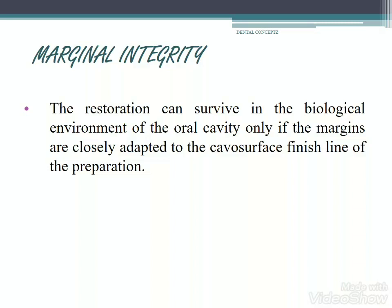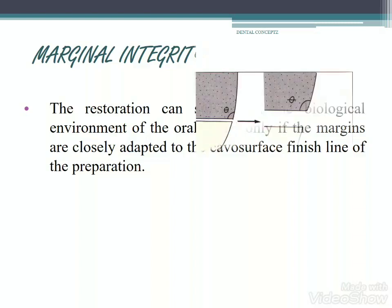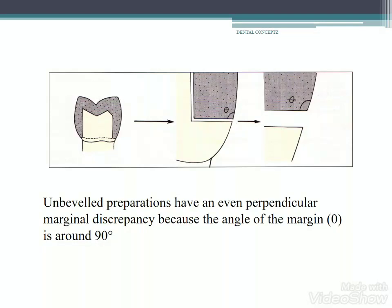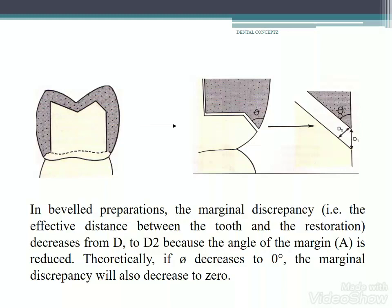The next principle is marginal integrity. The restoration can survive in the biological environment of the oral cavity only if the margins are closely adapted to the cavosurface finish line of the preparation. Unbeveled preparations have an even perpendicular marginal discrepancy because the margin angle is around 90 degrees. In beveled preparations, the marginal discrepancy decreases from d to d2 because the angle of the margin is reduced — theoretically, if theta decreases to 0 degrees, the marginal discrepancy will also decrease to 0.